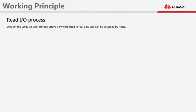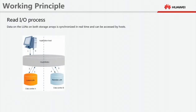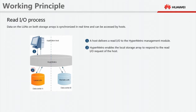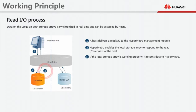Read IO process. Data on the LANs in both storage arrays is synchronized in real time and can be accessed by hosts. Step 9: A host delivers a read IO to the HyperMetro management module. Step 10: HyperMetro enables the local storage array to respond to the read IO request of the host. HyperMetro reads data from the local storage array or remote storage array. If the local storage array is working properly, it returns data to HyperMetro.